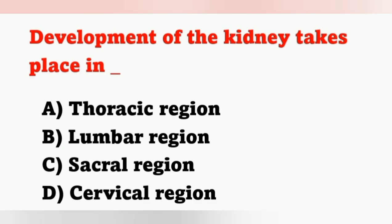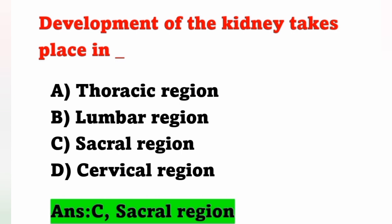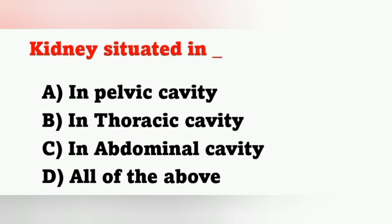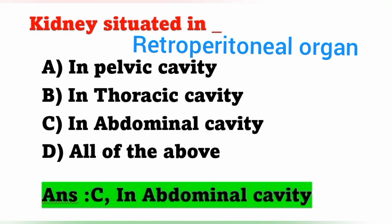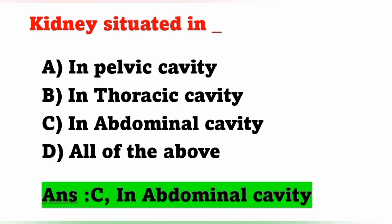Development of the kidney takes place in — option A: thoracic region, option B: lumbar region, option C: sacral region, option D: cervical region. Kidney is developed in the sacral region, so option C is correct. The kidney is situated in the abdominal cavity — option C is correct for that question as well. The kidney is a retroperitoneal organ situated behind the peritoneum.